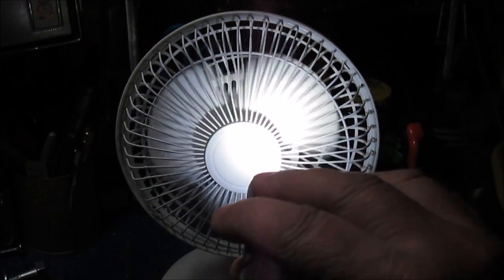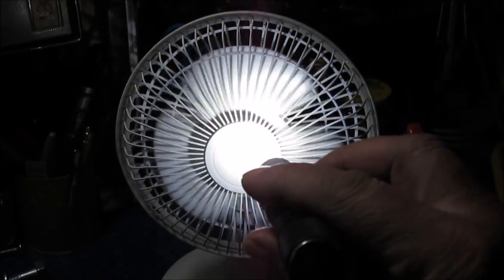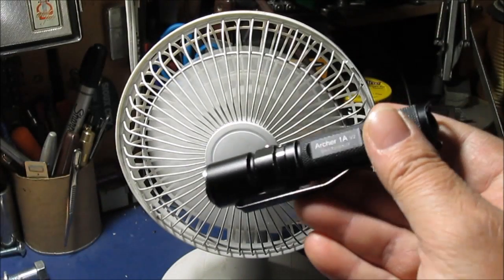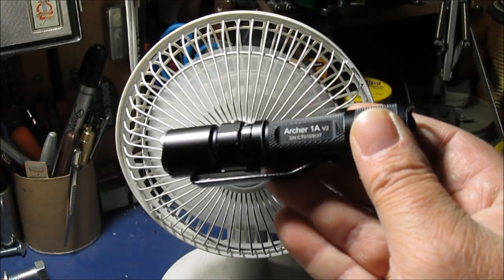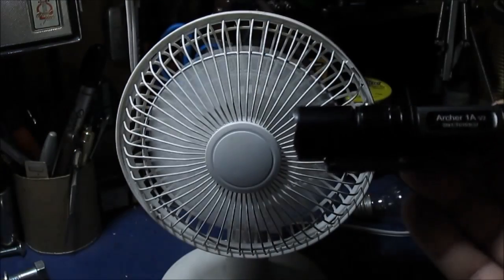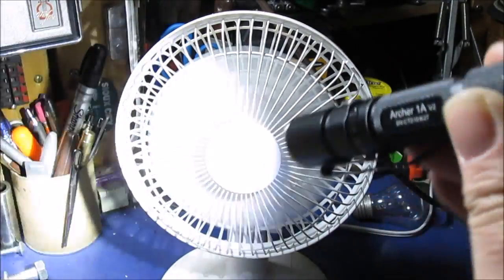But I can make it do it with this flashlight which is weird. And this is a AA. This is my Thrunite Archer 1A version 2. They don't make it anymore. Version 3 doesn't have that nice chrome looking bezel on it.